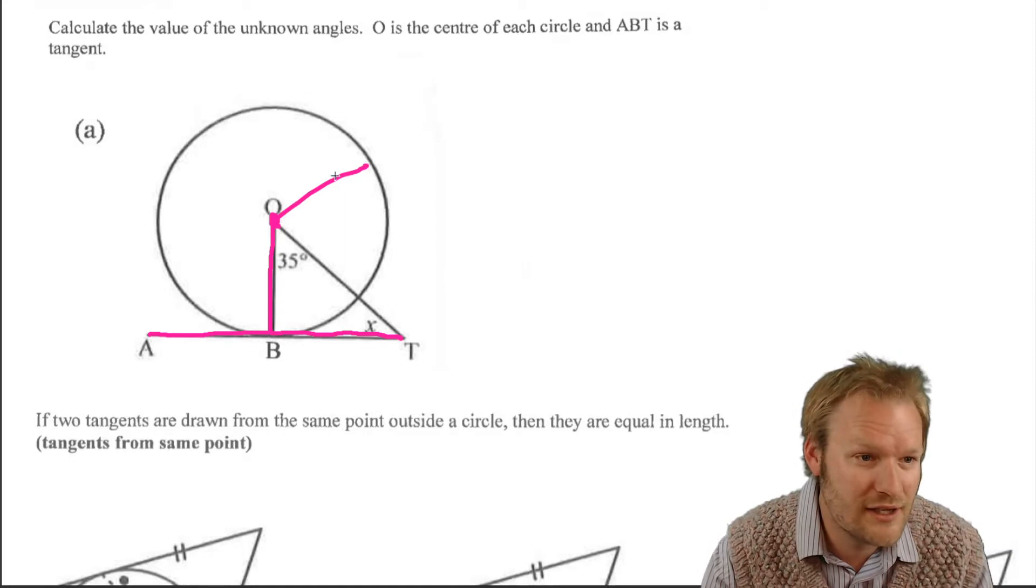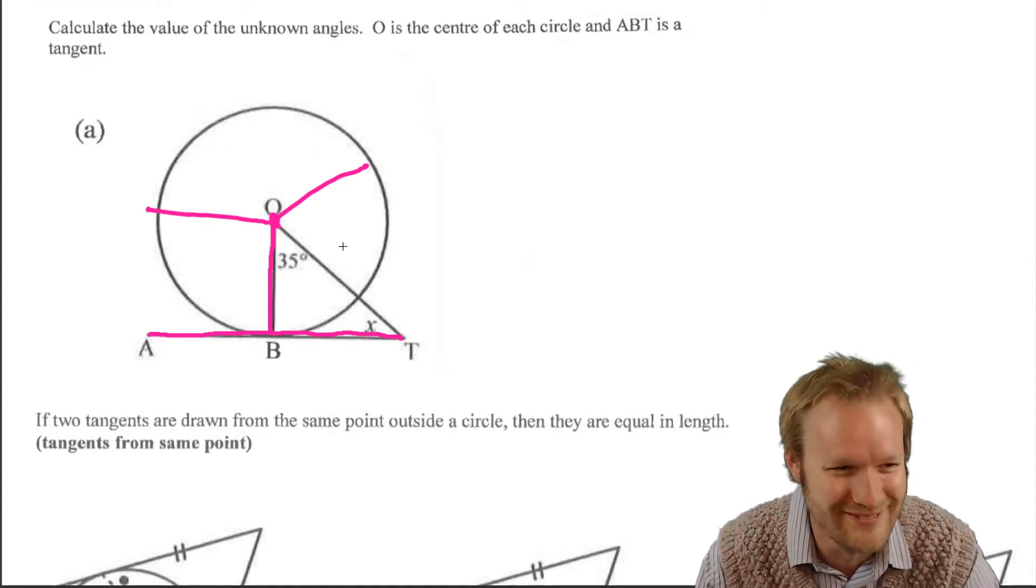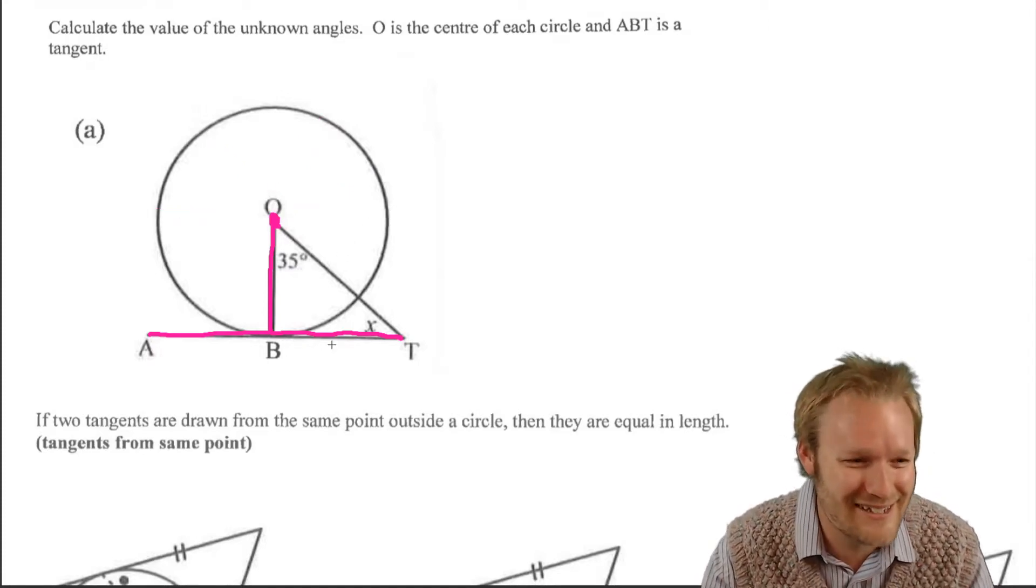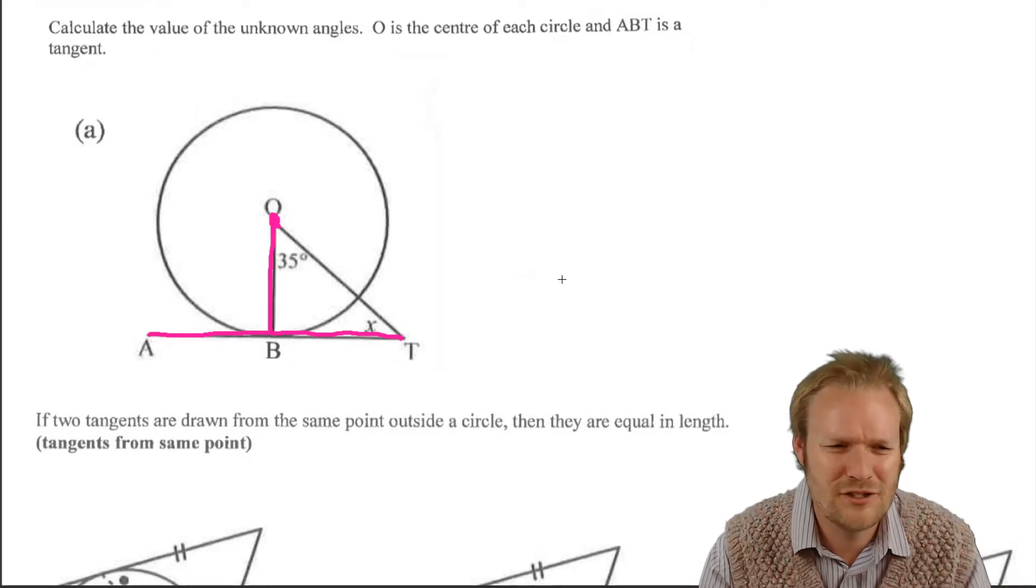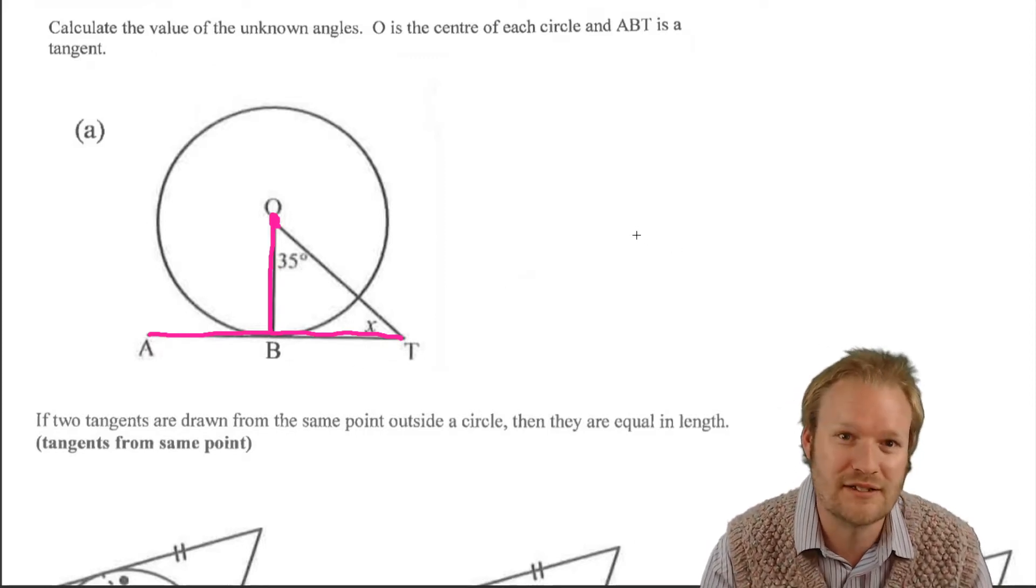So there's another radius, there's a radius, I'm a radius, you're a radius, this isn't a radius, now it's a radius. Okay. So we've got a tangent and a radius. Just type down quickly how you're going to determine what angle X is.